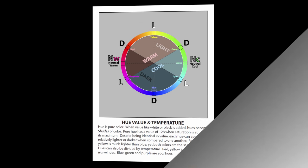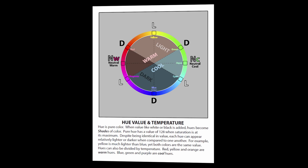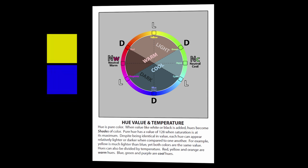The next page talks about hue, value, and temperature. Hue is pure color. When value like white or black is added, hues become shades of color. Pure hue has a value of 128 when saturation is at its maximum. Despite being identical in value, each hue can appear relatively lighter or darker when compared to one another. For example, yellow is much lighter than blue, yet both colors are the same value.